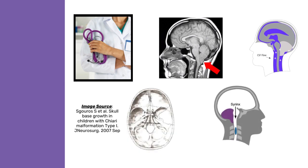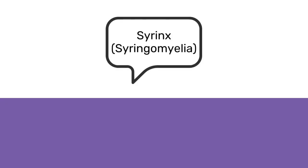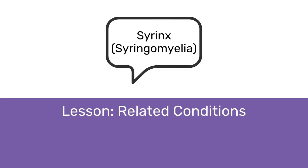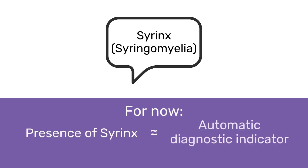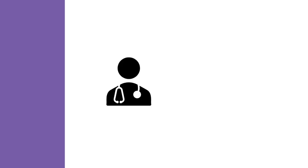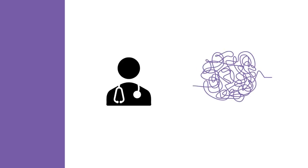The MRI also shows whether there is a syrinx, or a collection of fluid in the spinal cord itself. We will discuss syrinxes more in the lesson on related conditions, but for now it is important to know that the presence of a syrinx is close to an automatic diagnostic indicator. Depending on what type of doctor is doing the investigating, and whether the case is complicated or straightforward, sometimes Chiari patients will undergo further tests.